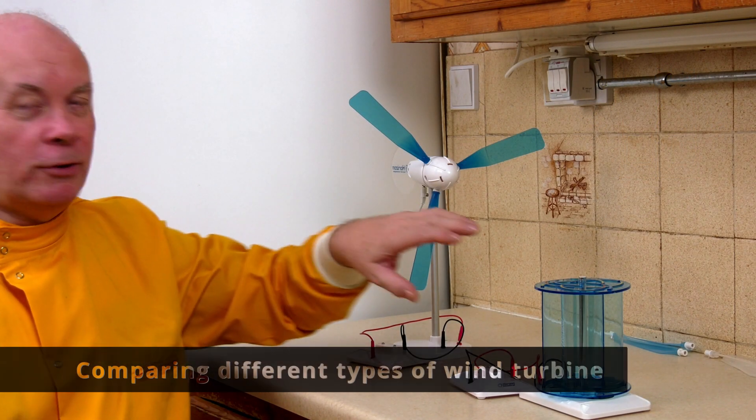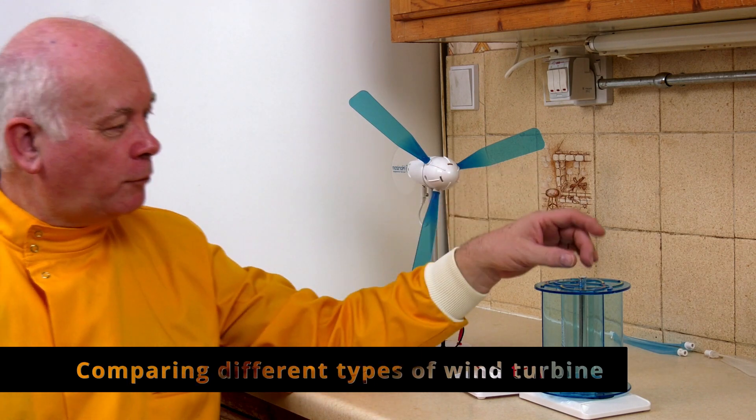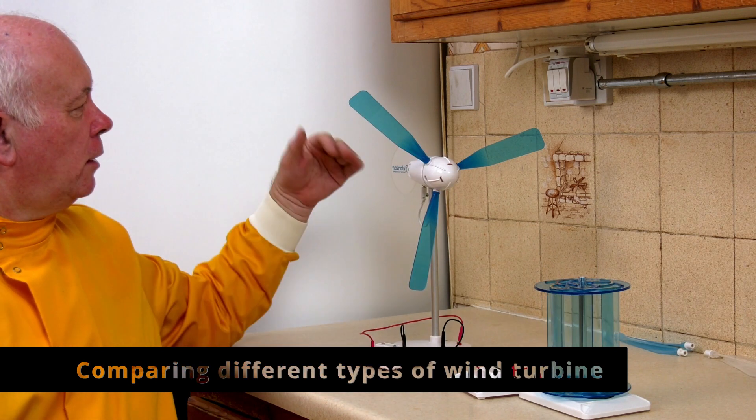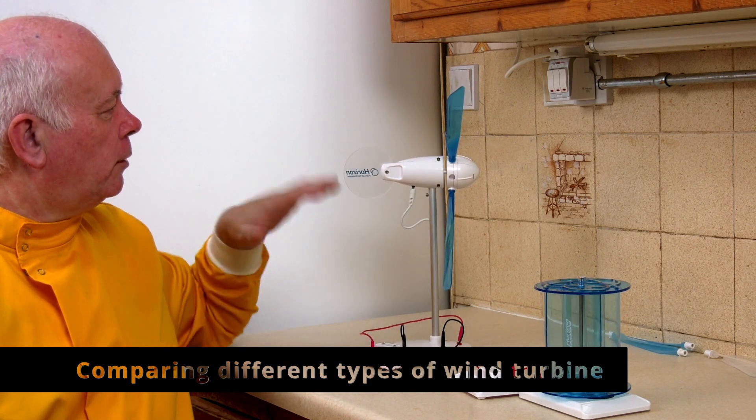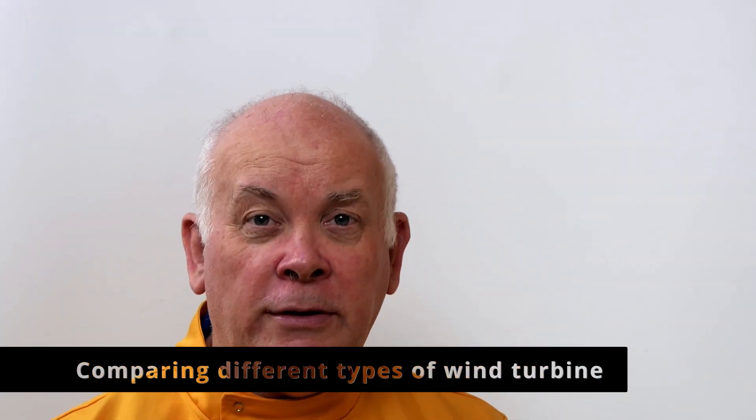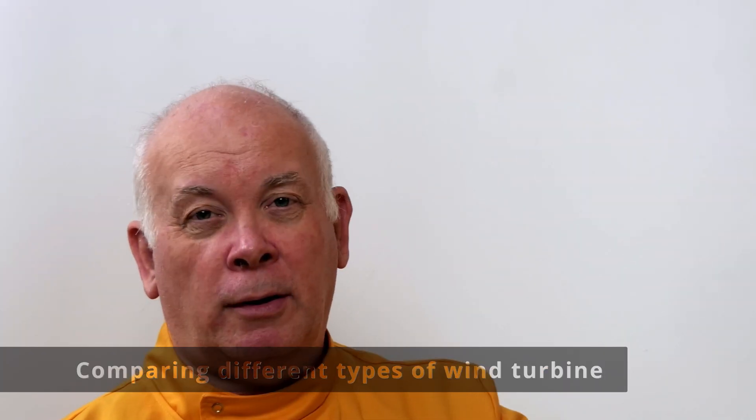I have here two different turbines. I've got a vertical wind turbine with its vertical axis and I've got a horizontal wind turbine with its horizontal axis. Two very different styles of turbine and they work largely in the same way but there are fundamental differences and those can affect how they're going to be used.